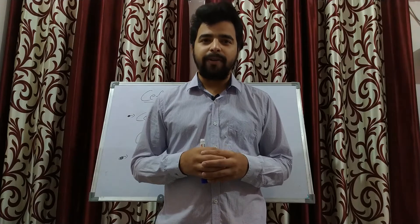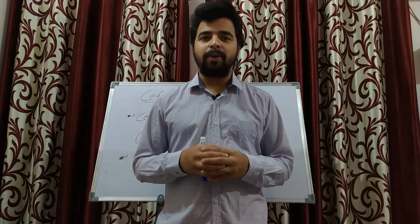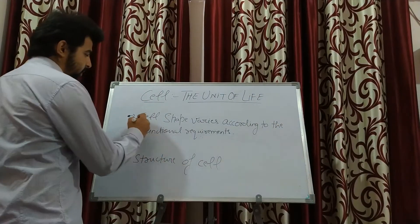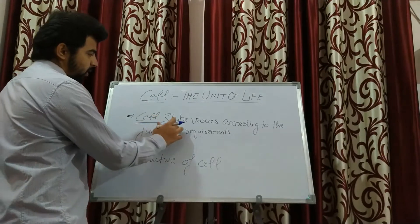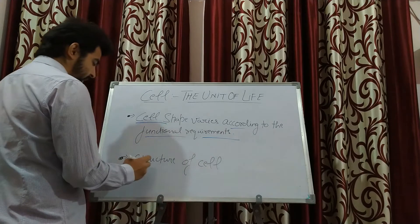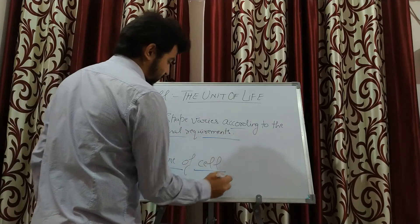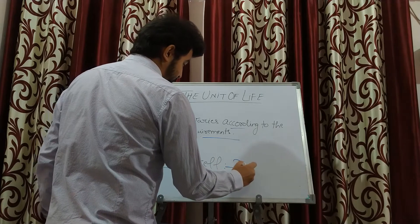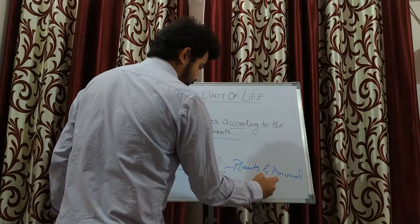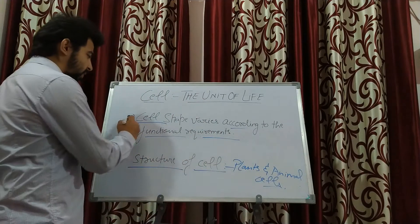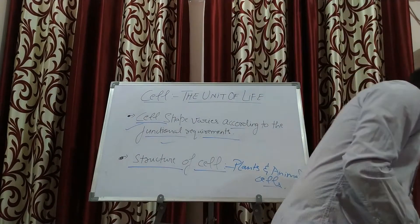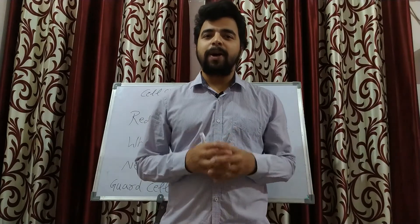Hello viewers, hope you all are doing absolutely fine. We are at our third part of this chapter, that is the cell unit of life. In today's video I am going to discuss two important parts: cell shape varies according to functional requirements, and the structure of plant and animal cells.